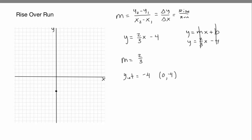We have a slope of 2/3, so we're going to do the rise over the run. Thinking about change in y over change in x — we're going to rise 2 and then run 3. From this point, we go up 2 units — rise meaning going up, 1, 2 — and then run 3 to the right — 1, 2, 3. So we go up 2 and then run 3.